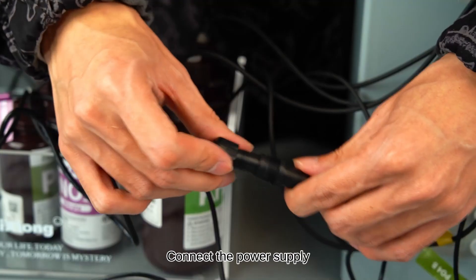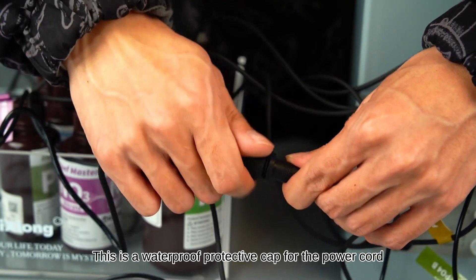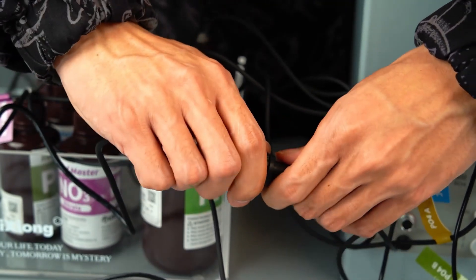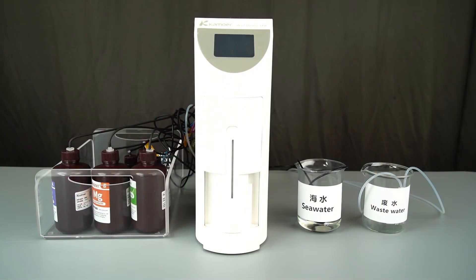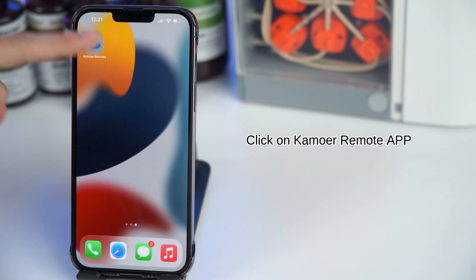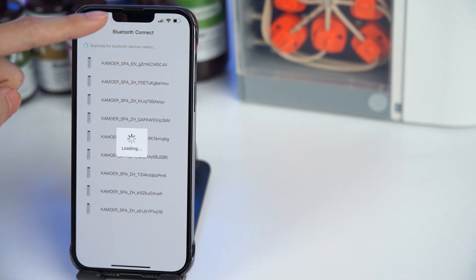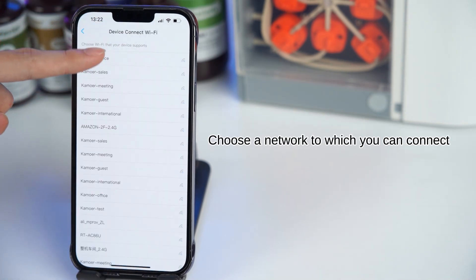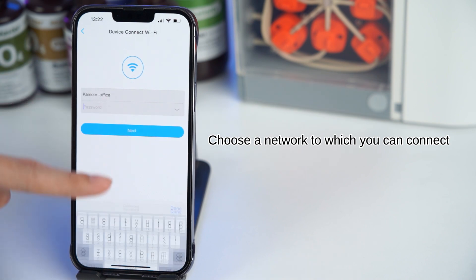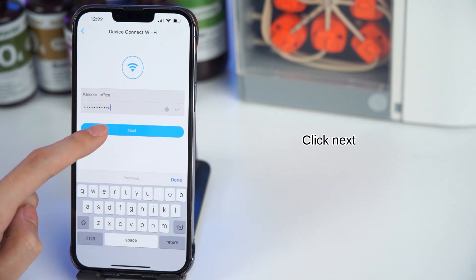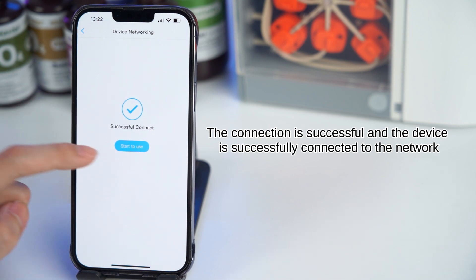Connect the power supply. This is a waterproof protective cap for the power cord. Click on CamoR remote app. Click to add device. Choose ReefMaster SPA. Choose a network to which you can connect. Select Input Password. Click Next. The connection is successful and the device is successfully connected to the network.